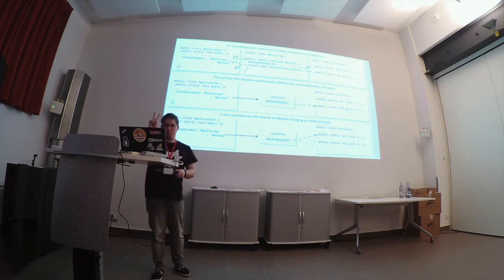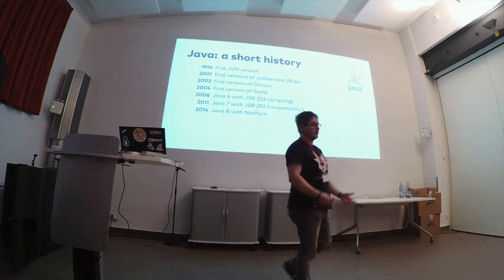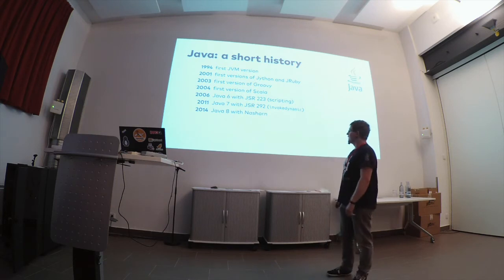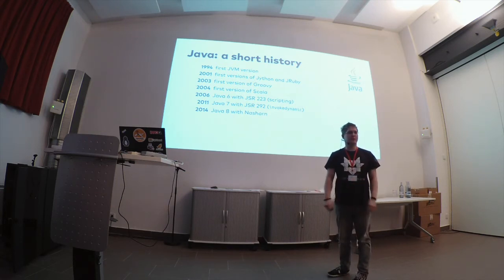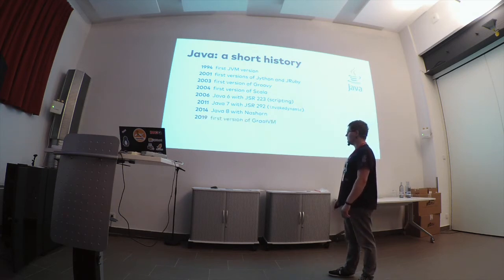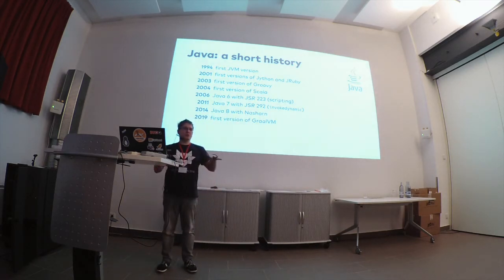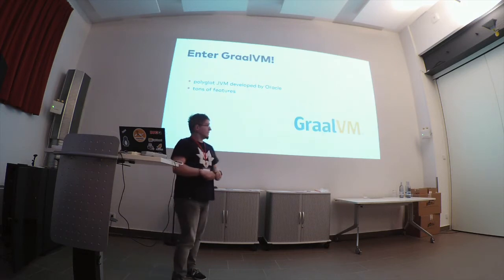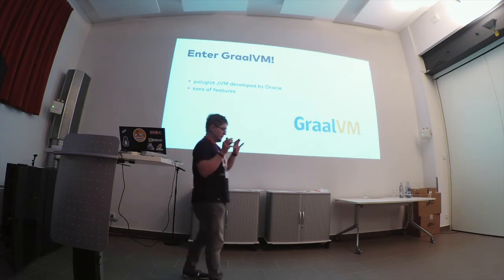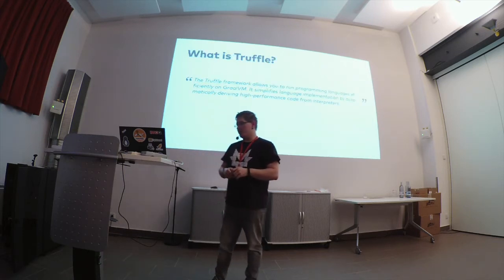But before we get to GraalVM, I have two more stops in the history book. In 2014, Java 8 came out with Nashorn — Nashorn was a JavaScript engine that will be deprecated and removed soon. Nashorn used invokeDynamic, so you could start to efficiently execute JavaScript. And then finally in 2019, the first version of GraalVM came out. GraalVM kind of tries to revolutionize the entire idea of running different languages on top of the JVM. It's developed by Oracle and it's got tons of features, and I'm going to focus on the specific feature that is very nice if you want to implement a programming language.